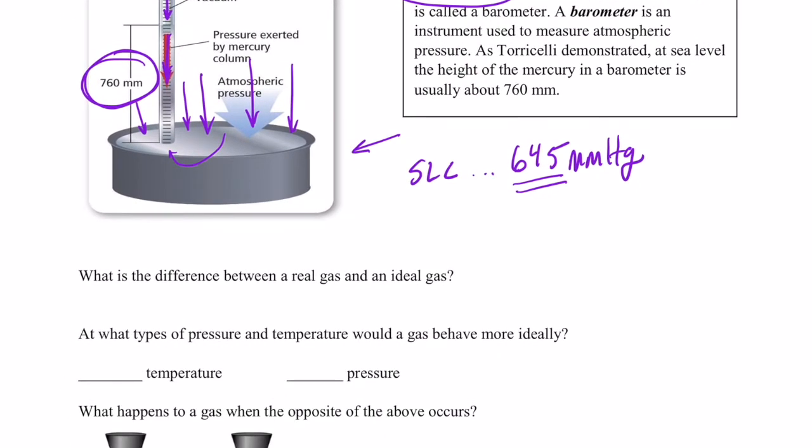Now gases do not always behave like we'd like them to. We call them real gases. However, in this class we like to treat them as if they're ideal. An ideal gas means that the particles have absolutely no intermolecular force of attraction between them. So no force of attraction between the gas particles. However, gases don't always behave that way. They have intermolecular forces of attraction that cause them to be attracted to each other. And as a result, they start taking on some liquid properties. We call these real gases.